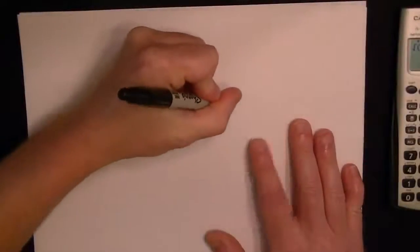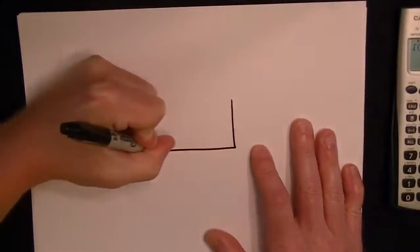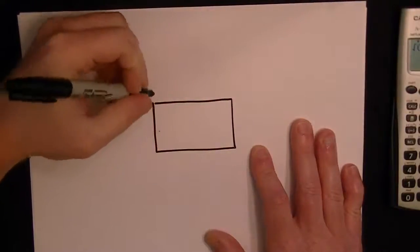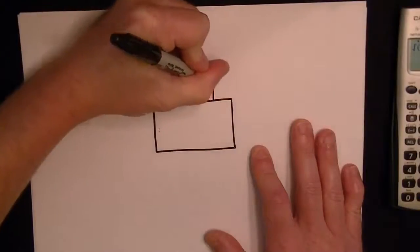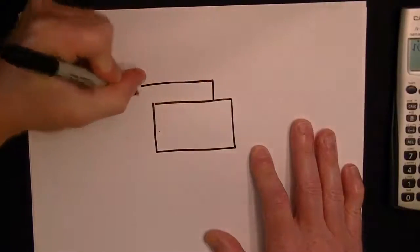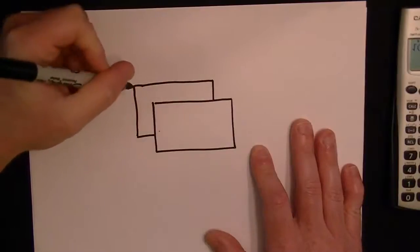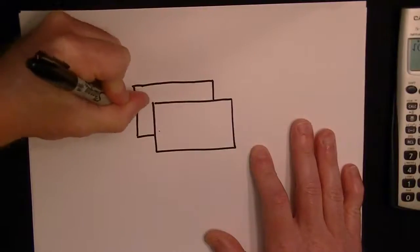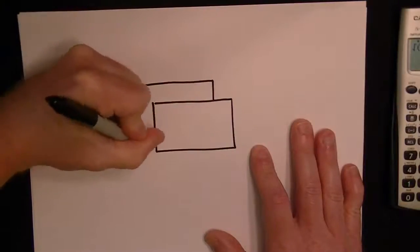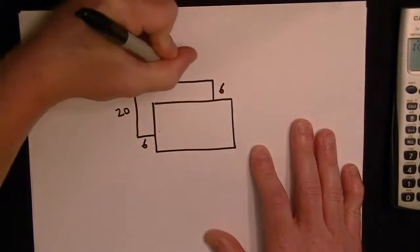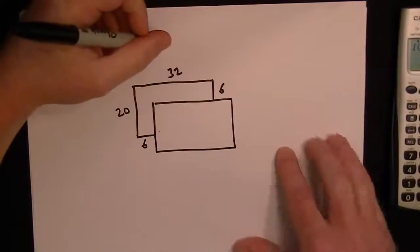Okay, we're told we have a house and an L-shaped flower garden. So just draw the house plan and then there's also this L-shaped flower garden that goes around it like that. And these are the measurements here: 20 feet on this side, 6 feet on this side, 6 feet on this side, and 32 feet here on the top.